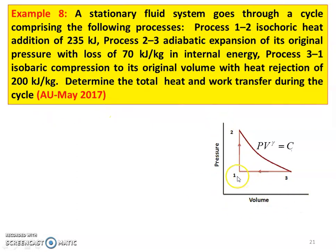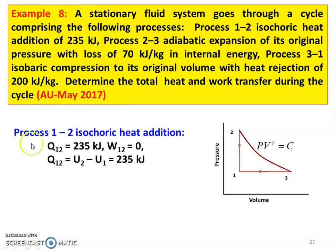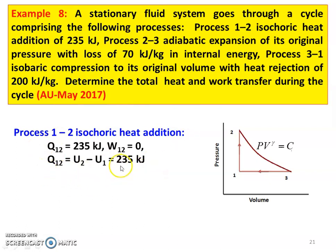Process 1 to 2 is a constant volume process, Process 2 to 3 is adiabatic (PV to the power gamma equal to constant), and Process 3 to 1 is a constant pressure process. For Process 1 to 2, isochoric heat addition: heat addition equal to 235 kilojoules. For constant volume, work done equal to 0. So Q12 equal to U2 minus U1 equal to 235 kilojoules — heat transfer equals change in internal energy.